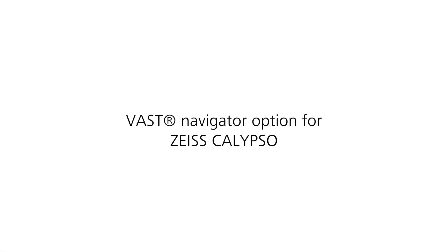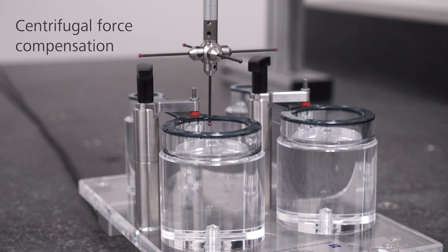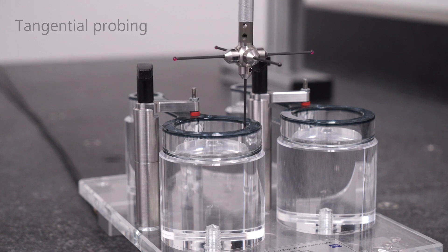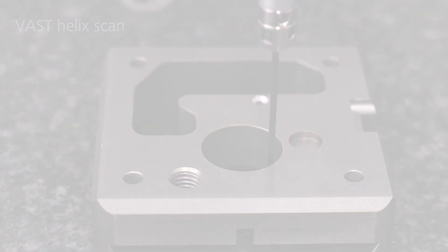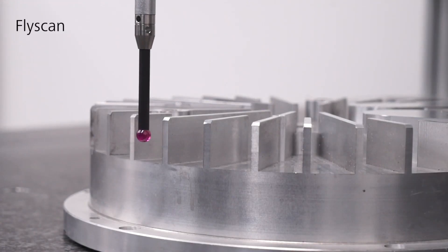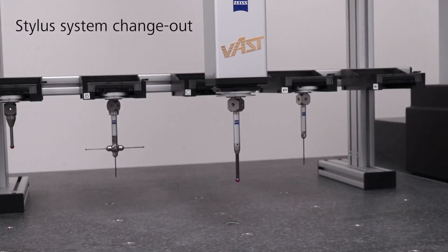This course covers the VAST navigator option in ZEISS CALYPSO, featuring centrifugal force compensation, tangential probing, and VAST helix scanning. It also deals with the VAST performance package comprised of fly scanning and quick stylus system changeout.